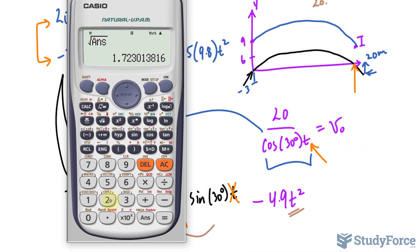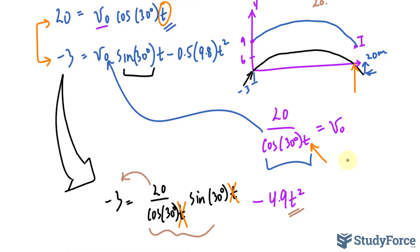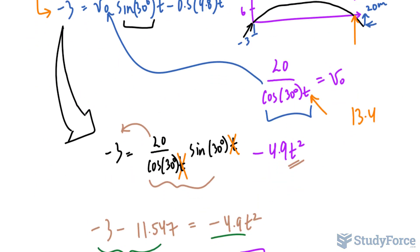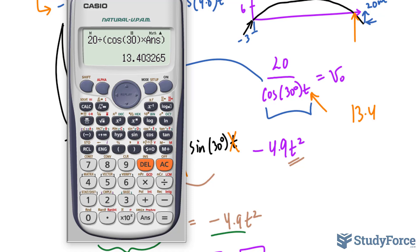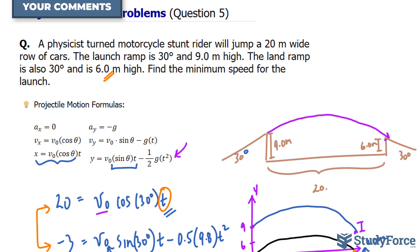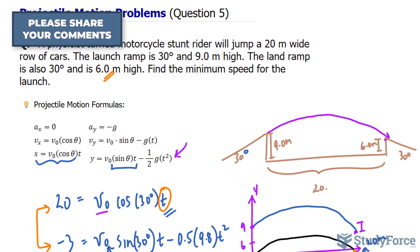So 20 divided by cosine at 30 degrees times the number that we just found. And that is 13.40. 13.40 meters per second is the initial velocity or the minimum speed that you need to reach this point.